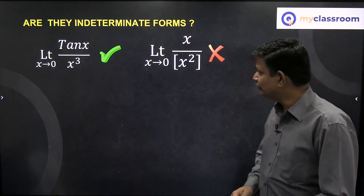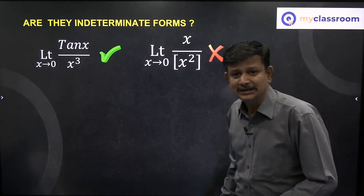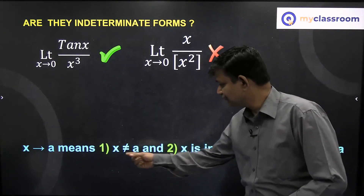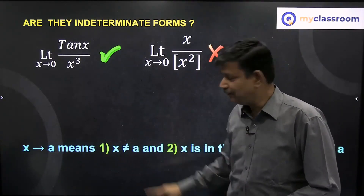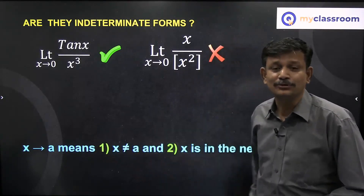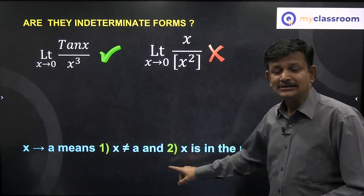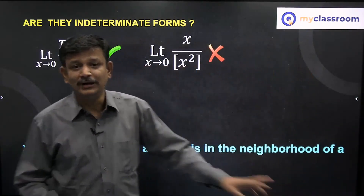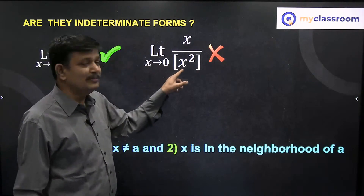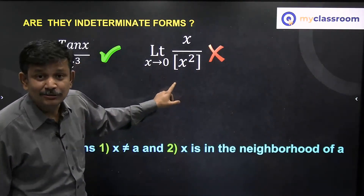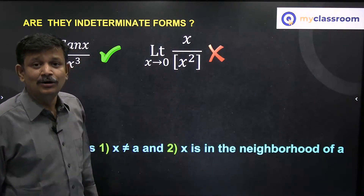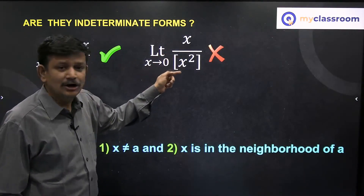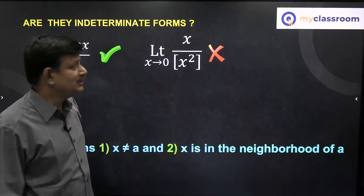What we need to be clear about is: when we say x approaches a, x is not equal to a — x is close to a, in the neighborhood of a. So if the denominator is not approaching 0 but is actually 0, that is not an indeterminate form. In the 0 by 0 indeterminate form, both numerator and denominator must approach 0; neither should simply be 0.